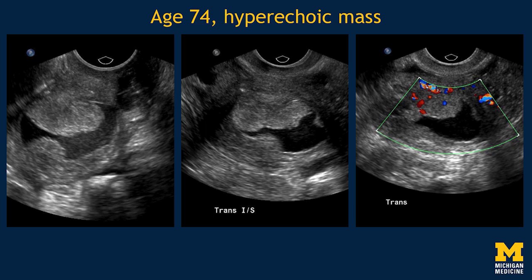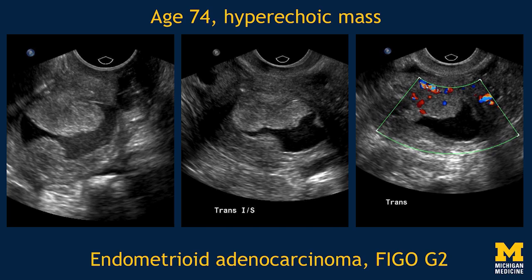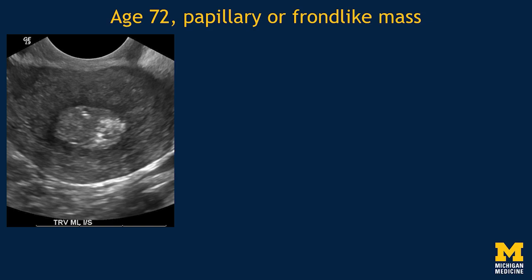Here's an example of a morphology which should be worrisome, particularly in a postmenopausal woman. Subendometrial leiomyomas tend to be hypoechoic because their echogenicity follows that of the myometrium. In endometrial origin lesions, such as polyps or carcinoma, the echogenicity follows that of the endometrium. So a hyperechoic mass usually comes from the endometrium, not the myometrium. In an older woman, this is highly likely to be a carcinoma. In this case, it was an endometrioid carcinoma, FIGO grade 2.